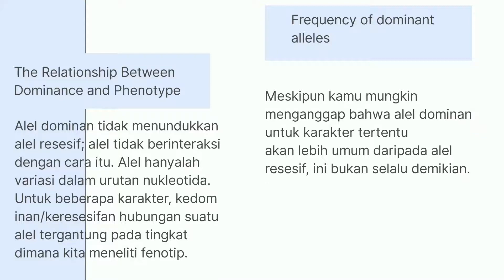Frekuensi alel dominan tidak selalu lebih umum daripada alel resesif. Sebagai contoh, sekitar 1 dari 400 bayi di Amerika Serikat dilahirkan dengan jari tangan atau kaki ekstra, suatu kondisi yang dikenal sebagai polidaktili. Beberapa kasus disebabkan oleh adanya alel dominan. Frekuensi polidaktili yang rendah menunjukkan bahwa alel resesif yang menghasilkan 5 digit jauh lebih umum daripada alel dominan dalam populasinya.